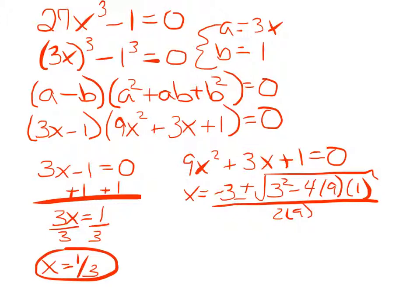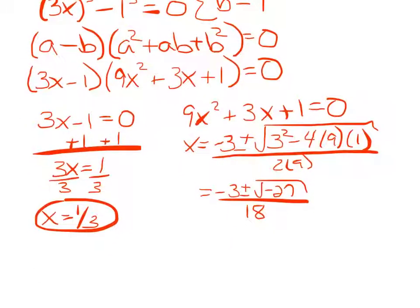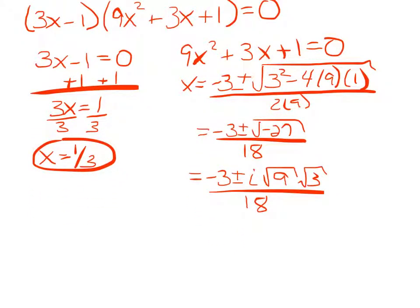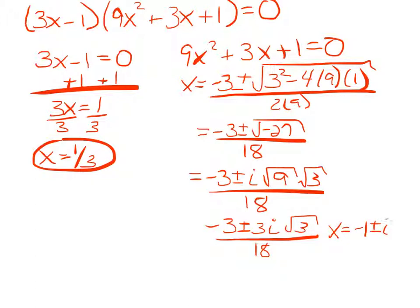Using the quadratic formula, I already did the calculations for the inside of the radical and I get negative 27. That gives an i because of the negative, and 27 can be divided by the perfect square 9 with 3 left, and the square root of 9 is 3. The 3, 3, and 18 can all be reduced by 3, giving me a final value of x equals negative 1 plus or minus i square root of 3 all over 6. So there's my first result, then the next two results.